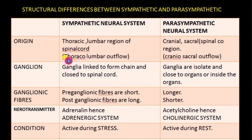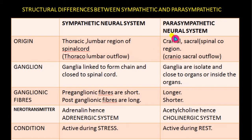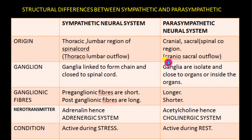That's why the flow is known as thoracolumbar outflow, as the information goes from the thoracic and lumbar regions to the target organ. Coming to the parasympathetic neural system, it originates from the cranial nerves and the sacral nerves of the spinal cord, so the outflow is known as craniosacral outflow.